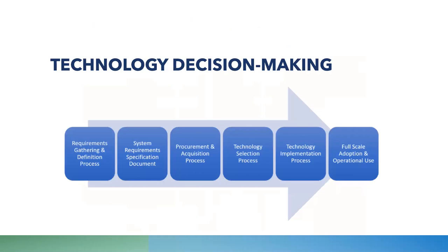Before getting into all of that, the first thing is ensuring you have a sound technology decision-making process, which is comprised of multiple processes. Reading left to right: a sound process starts with good requirements gathering and definition, which helps form a System Requirements Specification document, or SRS. Those requirements and the SRS serve as the foundation for your procurement and acquisition process, through which you select the technology that best addresses your requirements. Then you go through the technology implementation process — which is where standards are really key. The standards process really covers the first five pieces of that decision-making flow.